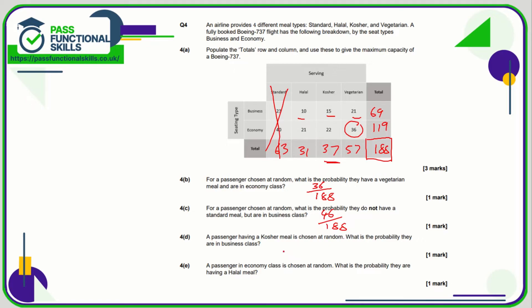Ten plus fifteen plus twenty-one is 46 out of 188. For part d, choosing from the kosher passengers — out of 37 — what's the probability they're in business? That's 15 out of 37. For the last part, choosing from the economy passengers — out of 119 — the probability of having a halal meal is 21 out of 119.